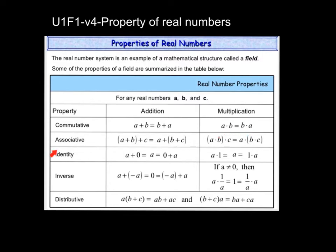The associative property is the grouping property, where it doesn't matter what group we add first — the sum will be the same. So like A plus B, you can add that and then add it to C. Or you could do B plus C first and then add it to A. Same thing with multiplication: it doesn't matter what order you multiply first, they all multiply to the same thing.